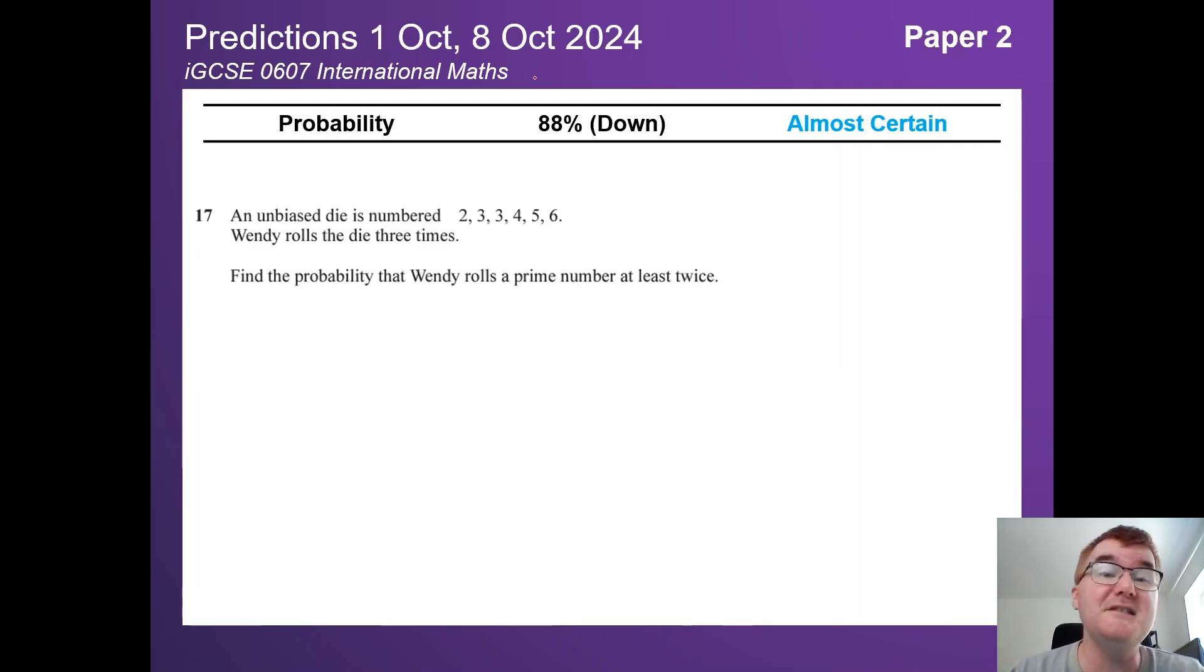Probability, slightly down at 88%, but a very big topic, and very big on paper 4 as well. This is a typical question here: working out Wendy rolls a prime number at least twice. Knowing these words like at least, at most, is really important for probability problems. If you have issues with these kinds of questions, check out the video above.